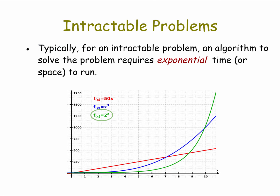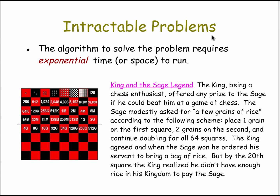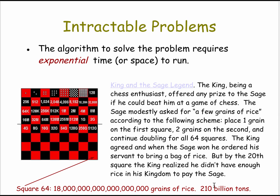Typically, an intractable problem is one for which the algorithms to solve it all require an exponential amount of time or space. To give you a sense of how inefficient that is, consider this story: a king agrees to pay his sage one grain of rice on the first square, two on the second, four on the third, doubling on each square, if the sage could beat him at chess. If you carry that out to the end, the king would owe the sage 210 billion tons of rice — clearly not understanding the concept of exponential growth.